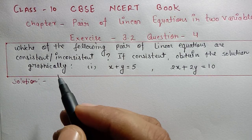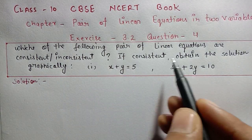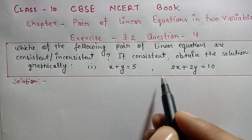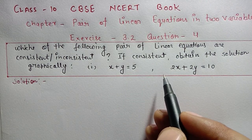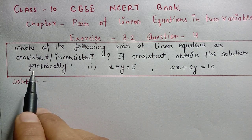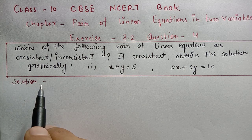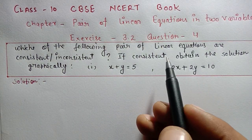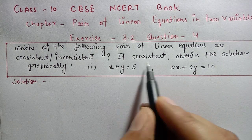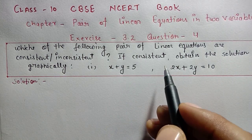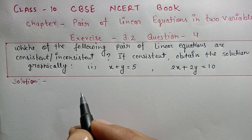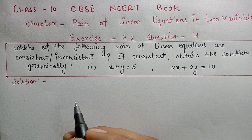यहां पर question कह रहा है, हमें पहले तो यह जो दो equations given हैं, इनको find करके यह बताना है कि यह consistent है या नहीं है. If consistent है, then solution आपको graphically बताना है. तो question number 3 और 2 में हमने पहले ही पढ़ रखा है कि consistent और inconsistent हम कैसे find करते हैं. Same procedure हम यहां पर use करेंगे और question को solve करेंगे.